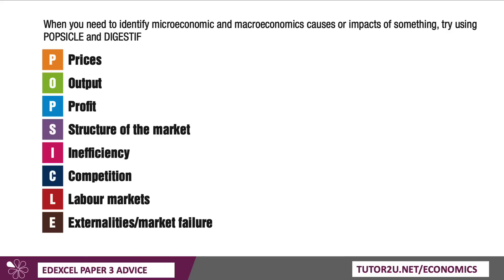A lot of students find it hard to think of what to write about on the micro side or what to include on the macro side. For micro: prices, output, profits, structure of the market, inefficiency or efficiency, competition or contestability, anything to do with labour markets or market failure and externalities. All of that would be micro, and there are loads of diagrams you can use to help you there.